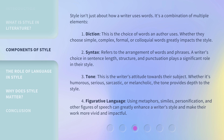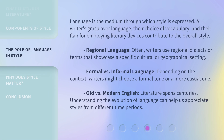5. Language: Language is the medium through which style is expressed. A writer's grasp over language, their choice of vocabulary, and their flair for employing literary devices contribute to the overall style. 6. Regional language: Often, writers use regional dialects or terms that showcase a specific cultural or geographical setting. 7. Formal versus informal language: Depending on the context, writers might choose a formal tone or a more casual one. 8. Old versus modern English: Literature spans centuries — understanding the evolution of language can help us appreciate styles from different time periods.